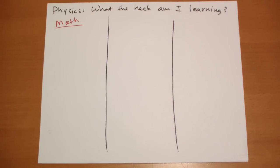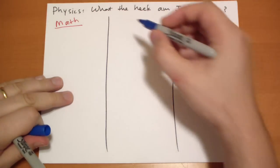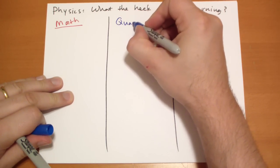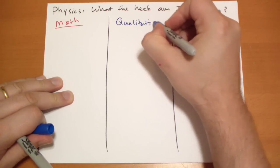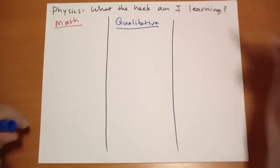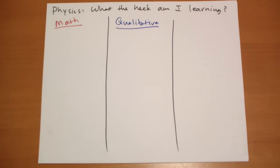And the second bit that you need to learn is you need to have, and the word they use is qualitative. And what qualitative means is that's like the knowledge that when you throw a ball in the air, it's going to fall back to the earth.